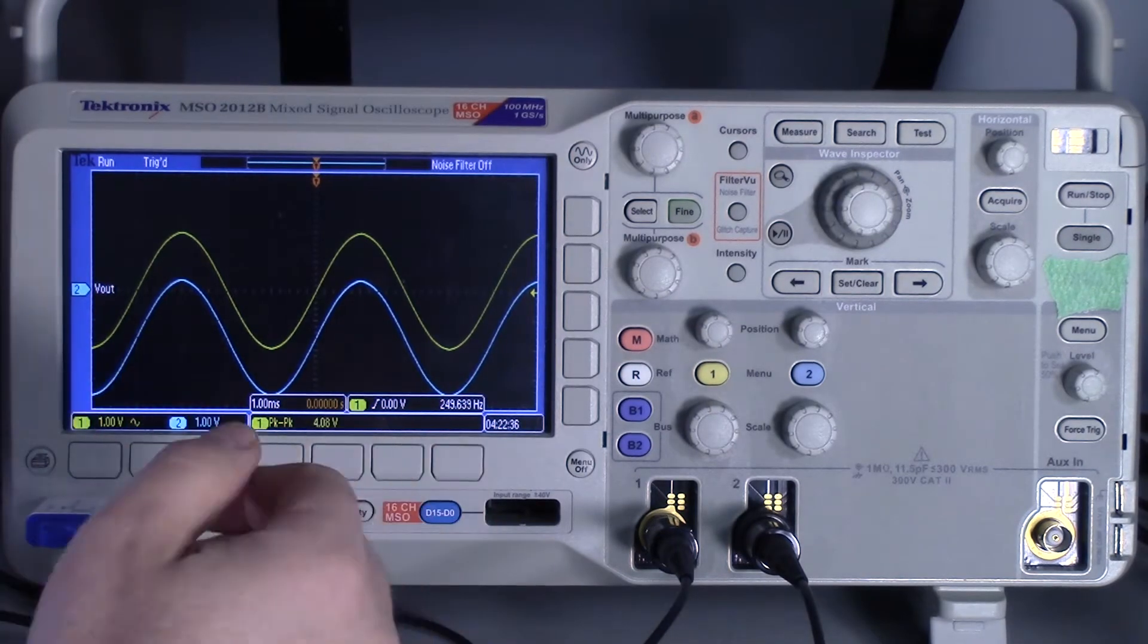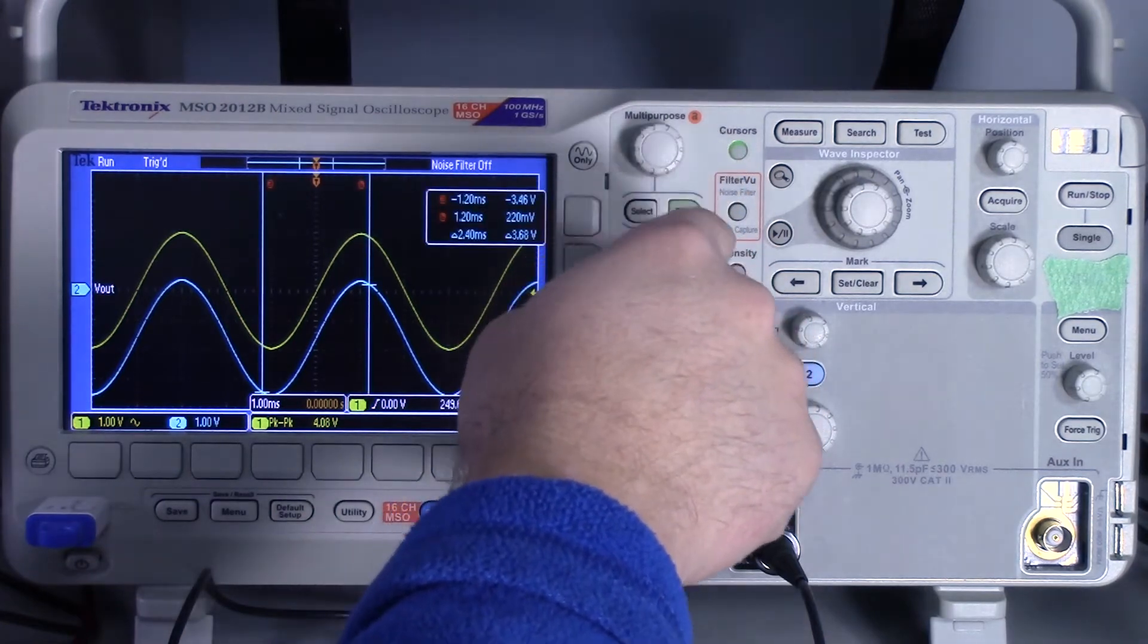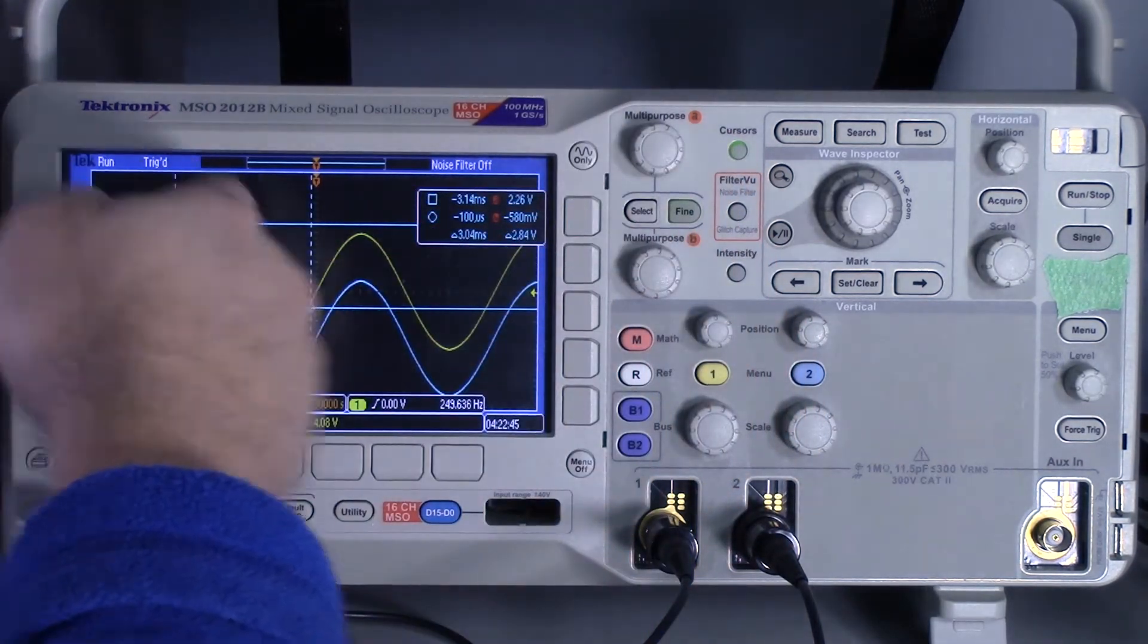Now the first way, which might be what you're most familiar with, is I can use the cursors. So I go up here and press the cursor button, and then I want to press the cursor button again because I want the vertical and the horizontal.